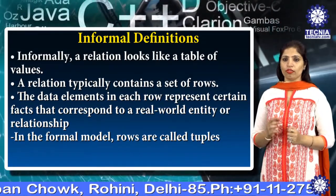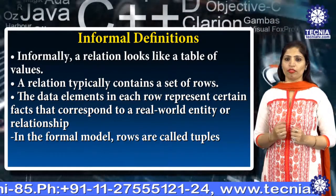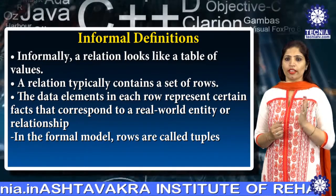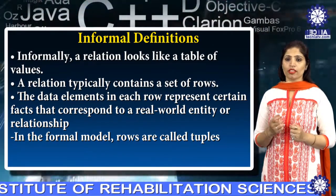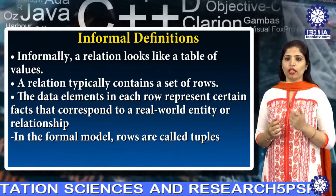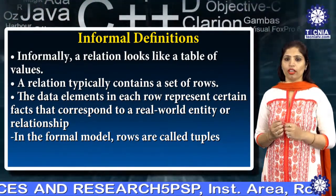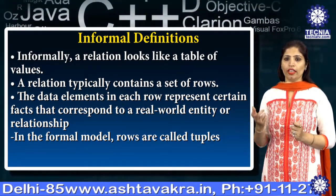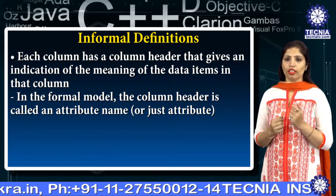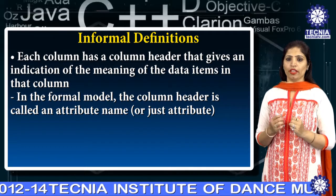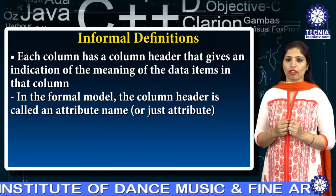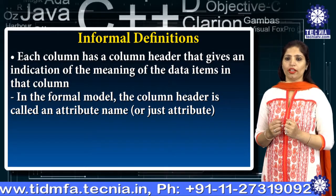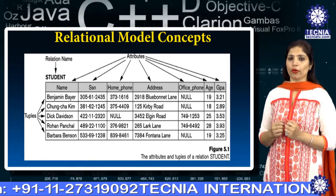The first concept is relation. Informally, a relation looks like a table of values. A relation typically contains a set of rows. The data elements in each row represent certain facts that correspond to a real-world entity or relationship. In the formal model, rows are called tuples. Each column has a column header that gives an indication of the meaning of the data item in that column. In the formal model, the column header is called an attribute name or attribute. Here is an example of the relation.